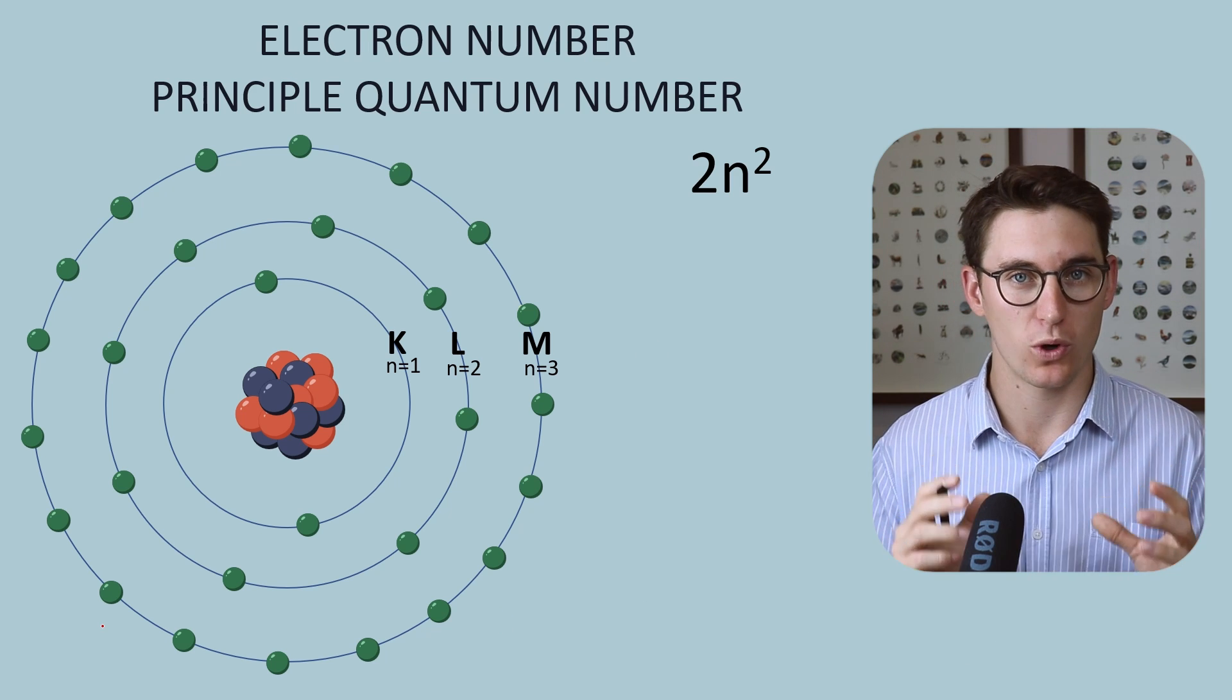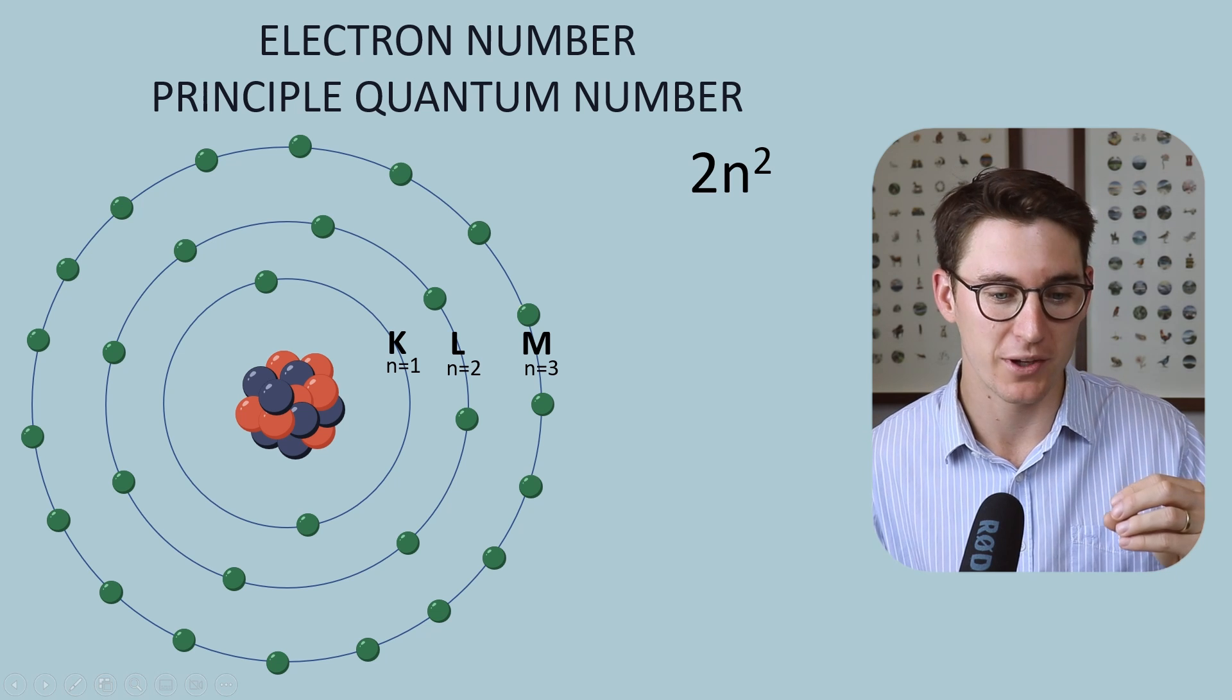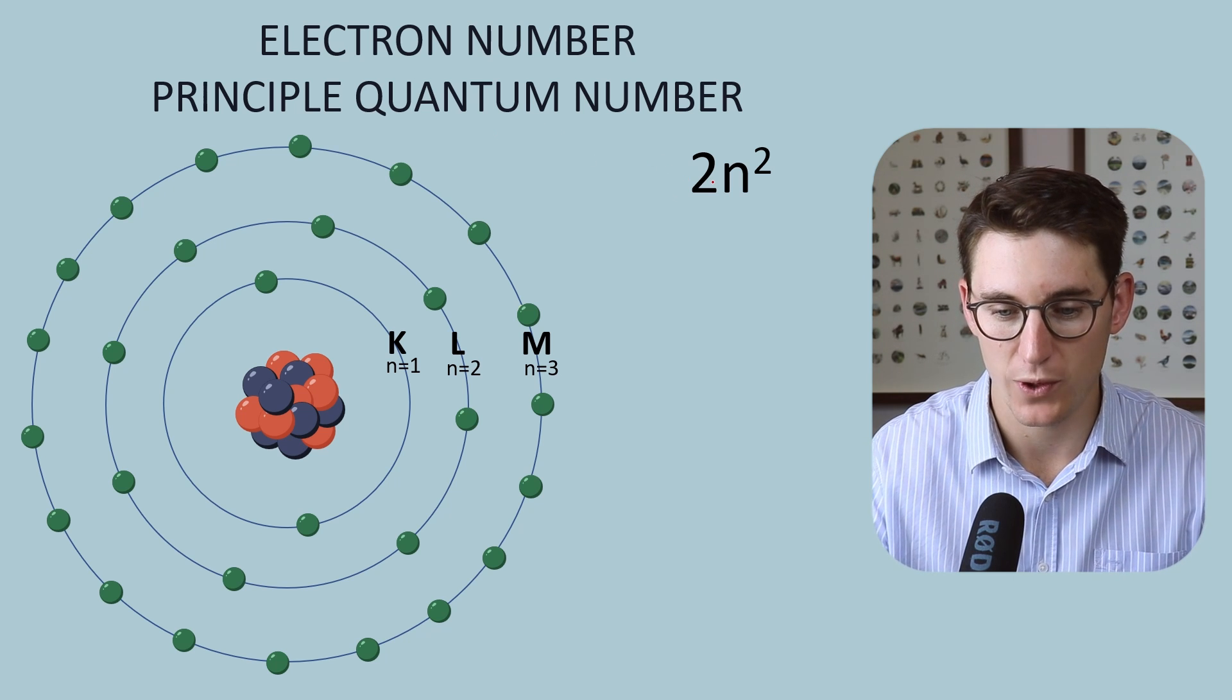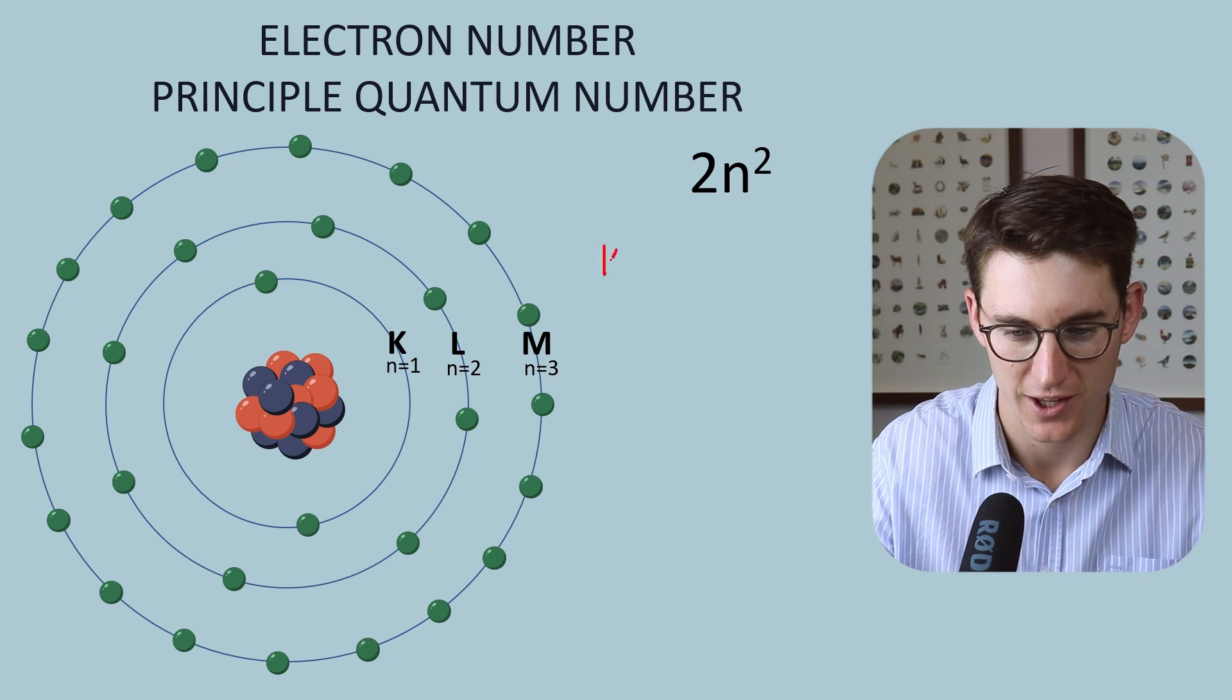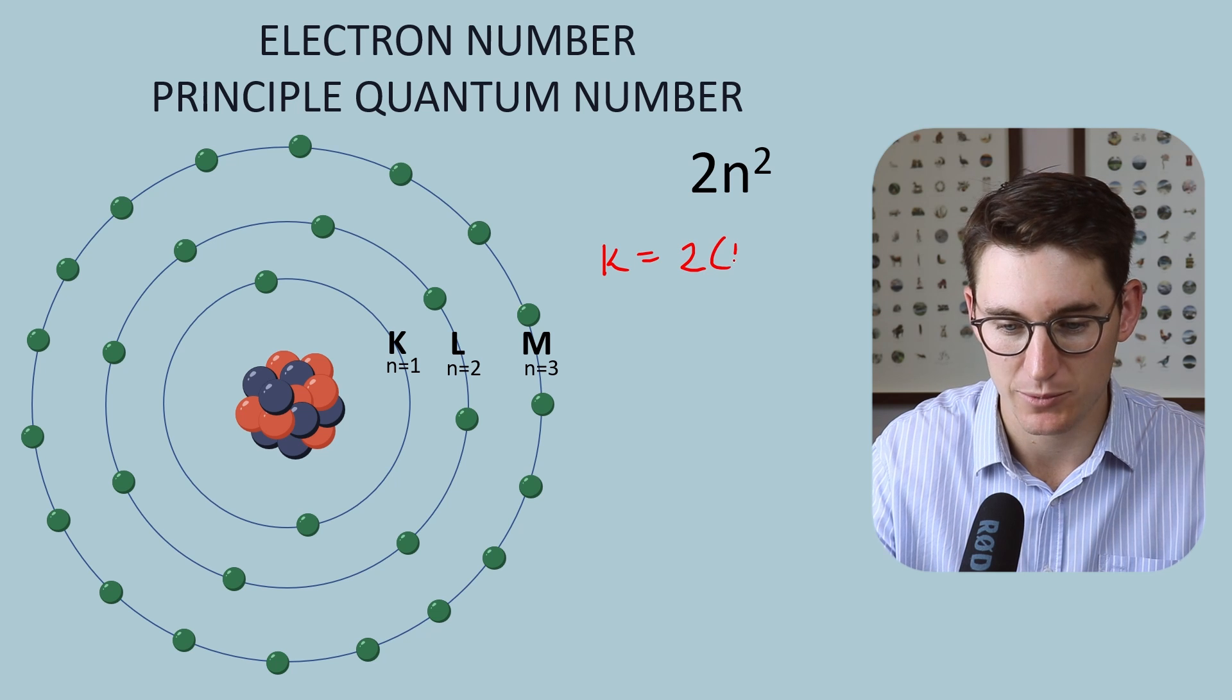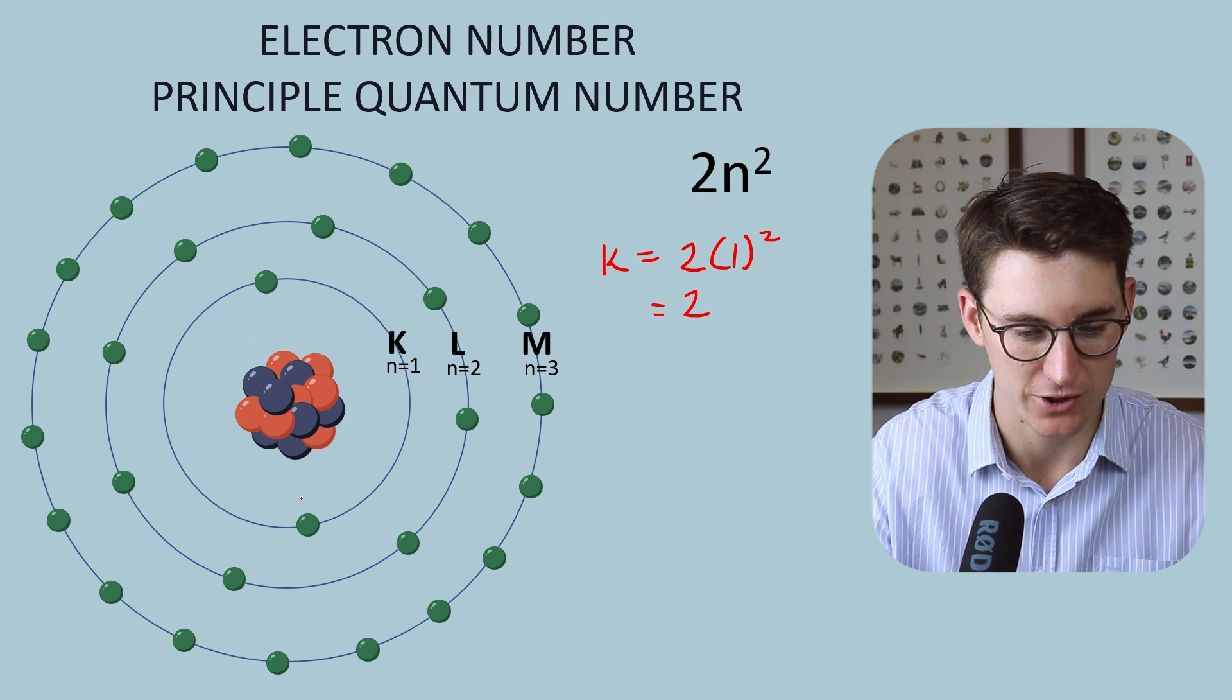If we go back now to our principal quantum number, the number we've labeled each one of these energy levels, we can use that number to then determine the number of electrons that that specific shell can house. The way we do that is by using this formula here, 2n to the power of 2. So if we look at our K-shell here, our K-shell has a quantum number of 1. So the number of electrons that our K-shell can house is 2 times 1 to the power of 2. 1 to the power of 2 is 1. The number of electrons in our K-shell will be 2. You can see there are 2 electrons here.